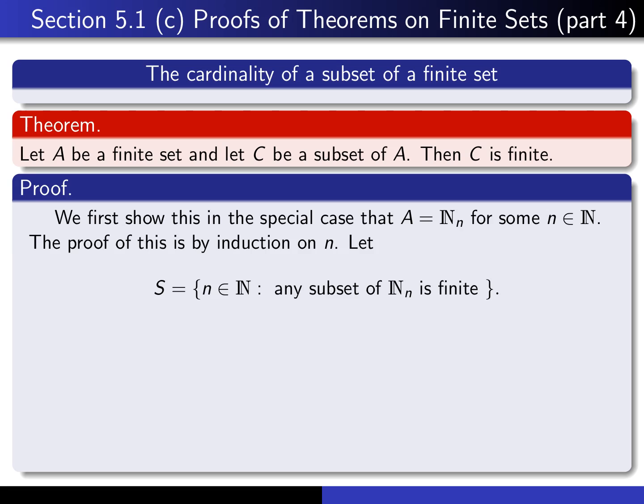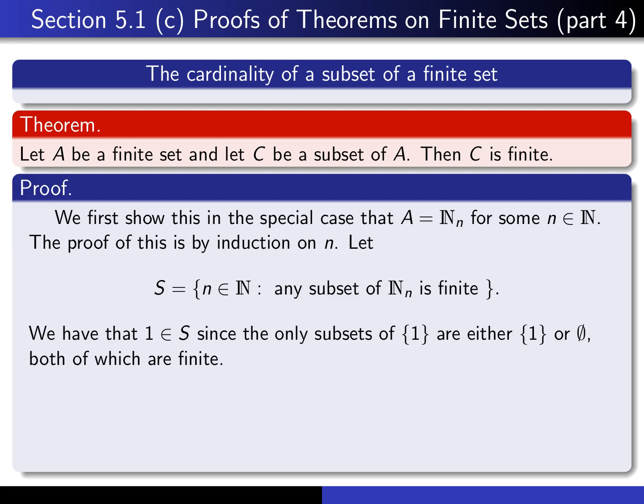The first step is to show that the basis step is true — in other words, we have to prove that 1 is an element of S. Showing that 1 is an element of S is the same as showing that any subset of N_1 is finite. N_1 is this set here, and the only subsets are either itself, which is certainly finite because it has only one element, or the empty set, which is also finite because it has zero elements. That concludes the proof of the basis step.